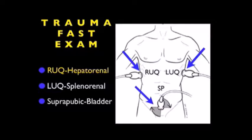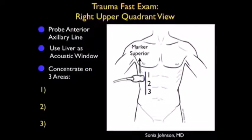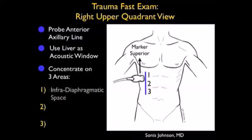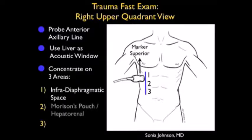Let's begin this module with a review of how to perform the Right Upper Quadrant View of the Trauma FAST Exam. Remember that the probe is positioned in the long axis configuration with the marker dot superiorly, and we're going to place the probe in between the ribs at about the anterior axillary line. Here we want to focus on three areas: number one, the infradiaphragmatic space,